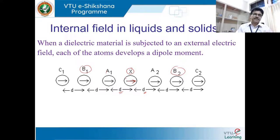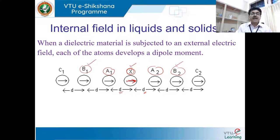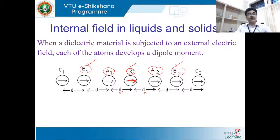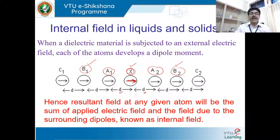Even a dipole has an electric field. The net charge of a dipole is zero, but the net electric field is not zero. This dipole has its own electric field, and it is also in the presence of neighboring dipoles. These neighboring dipoles also have some influence on the electric field at dipole x. Even B1 and B2, which are farther away, still have some influence. Therefore, the net resultant electric field at any given atom will always be the sum of the applied electric field and the field due to the surrounding dipoles. This is called the internal field.